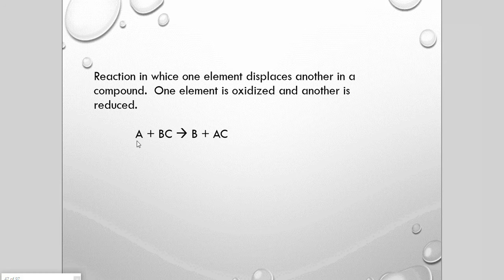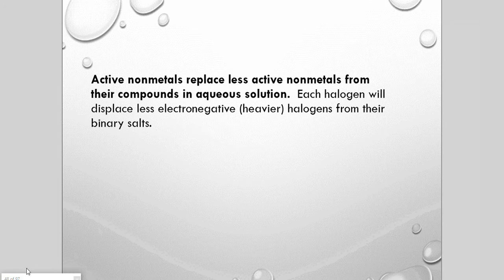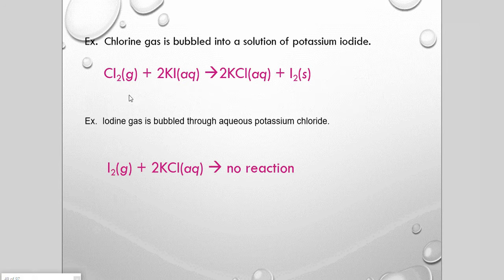Single replacement reactions are all about the activity of the elements involved. A single atom or diatomic molecule is exposed to an ionic system in aqueous solution, and either it reacts or it doesn't. For non-metals it depends on their relative activity. For example, chlorine gas exposed to potassium iodide: because chlorine is more active than iodine, chlorine replaces the iodine, freeing iodide as iodine and forming a potassium chloride solution. Iodine trying to replace chlorine in potassium chloride yields no reaction because iodine is less active than chlorine.